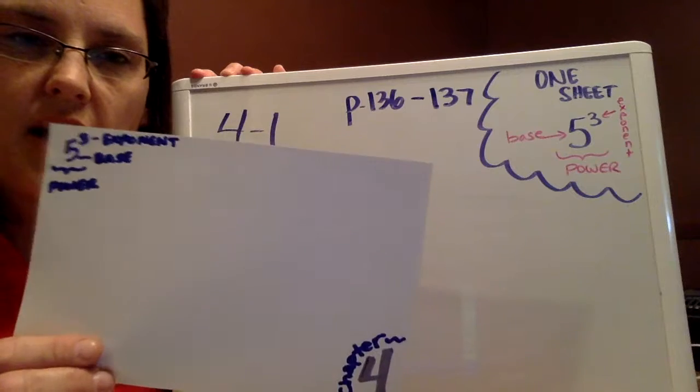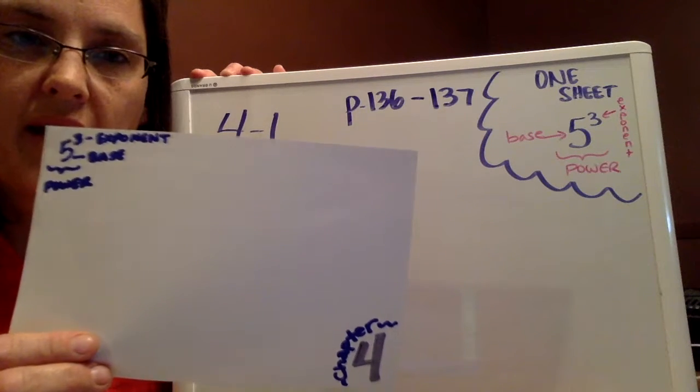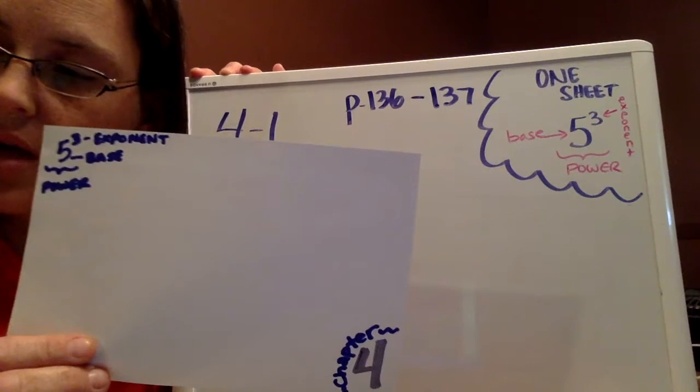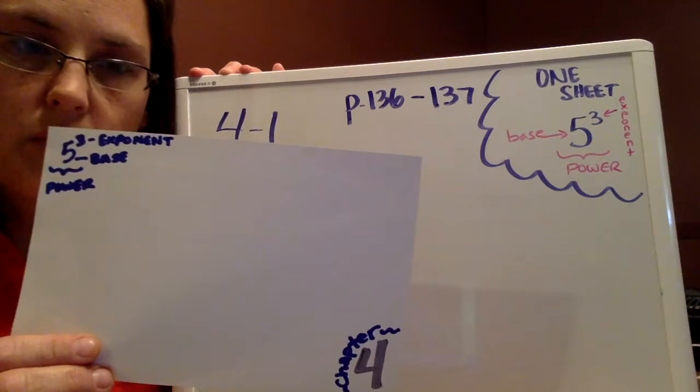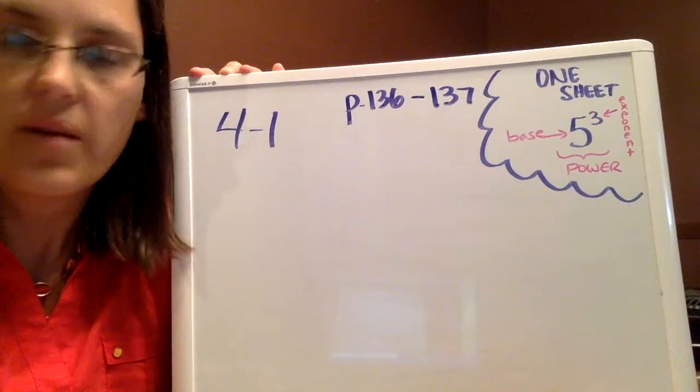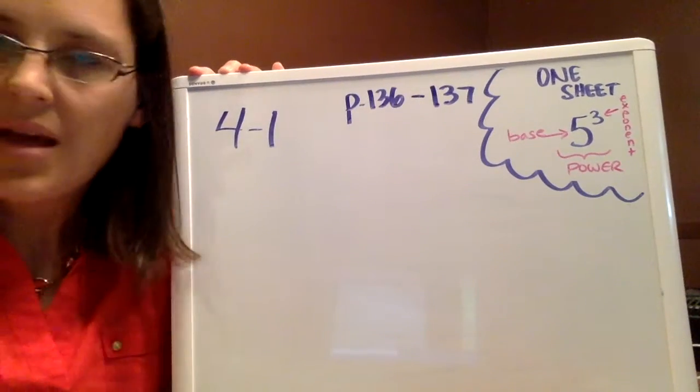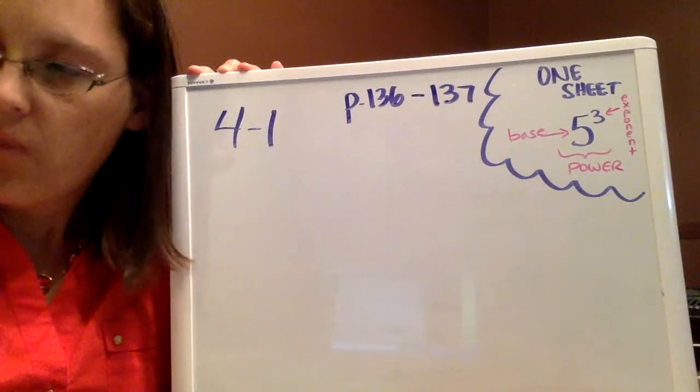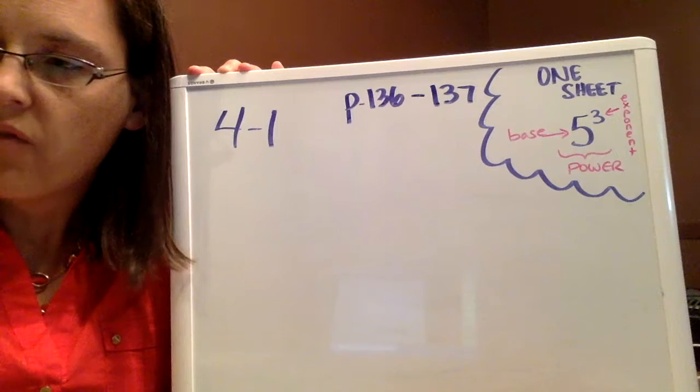For one sheet for Section 4.1, I added the vocabulary words, which are power, base, and exponent. That's just in the corner there. That's pretty much all I'm going to write down for 4.1. I've already looked at my examples, and I think I'm pretty good to go with what's being required in 4.1.